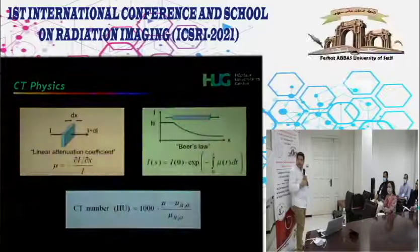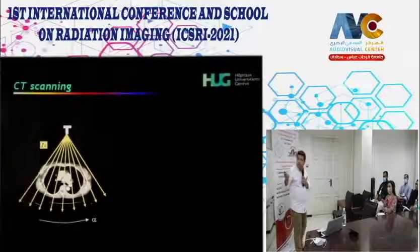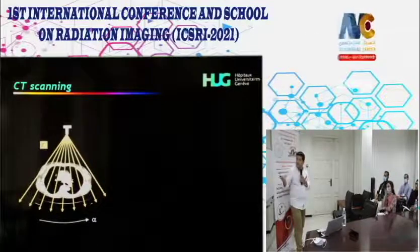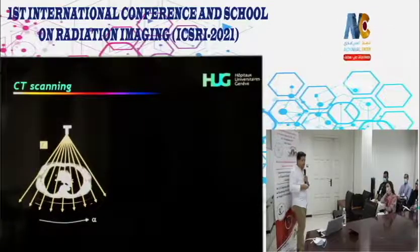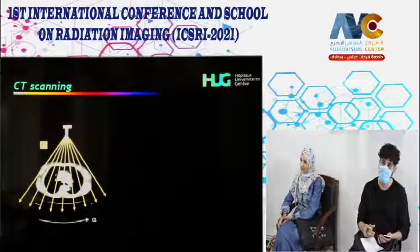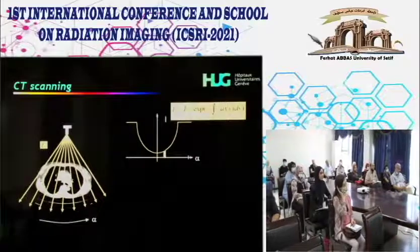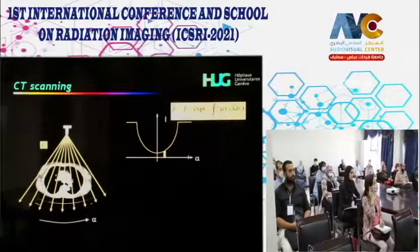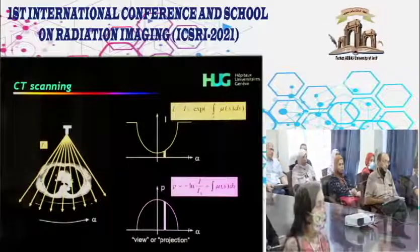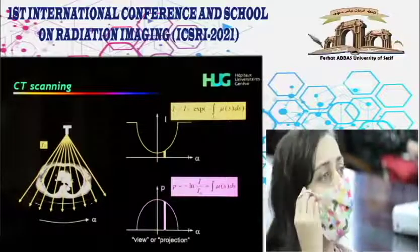In x-ray CT, an x-ray tube at the top and a bank of detectors on the opposite side collect data using a fan beam. Each detector corresponds to one line of response. We collect projections and take their logarithm as the first step before image reconstruction.